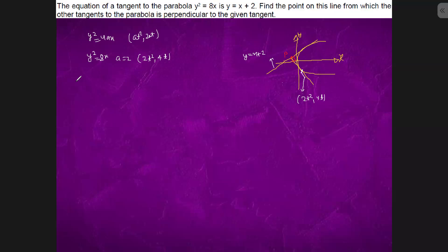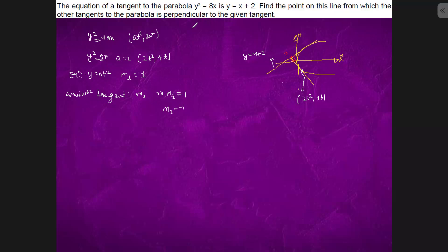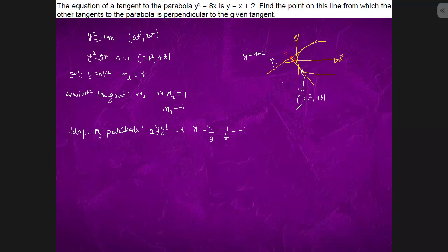The point is (2t², 4t). The equation of line is y = x + 2, so the slope of the line will be 1. The slope of the other tangent will be m₂, and m₁ · m₂ = −1, so m₂ = −1. Now, differentiating the parabola: 2y · y' = 8, so y' = 4/y. Since y = 4t, that means y' = 1/t = −1, so t = −1.